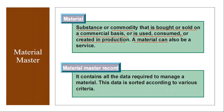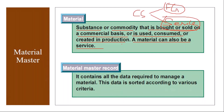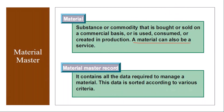Even a service can be created as a material. In the Customer Service module, we will normally use two types of materials: finished products, because we produce the product and sell it to the customer, and services as a material, because after the sale you provide some service to the customer. For example, a technician going to the customer's place and doing an installation — that installation service can also be created as a material.